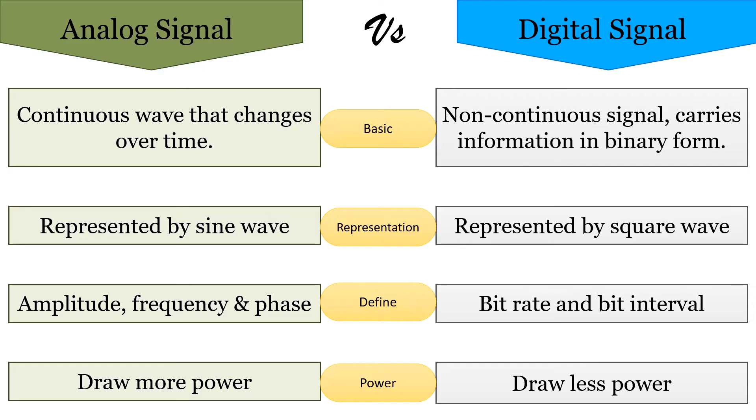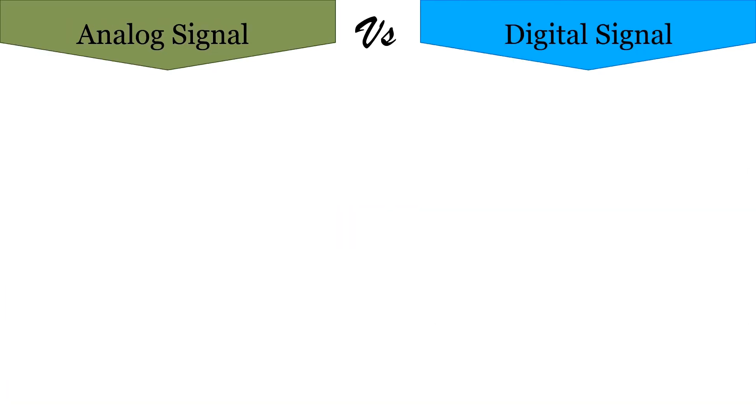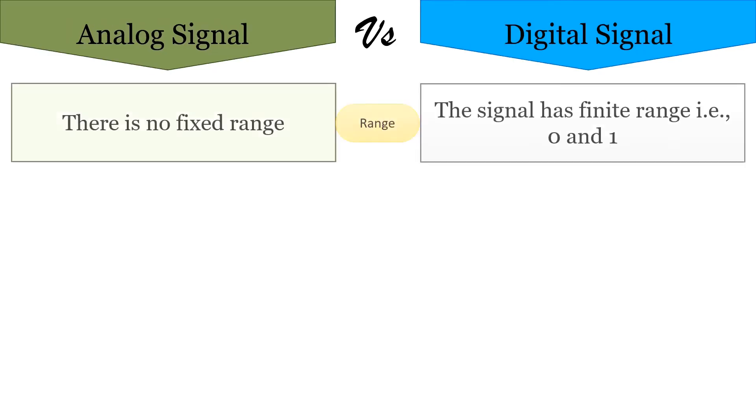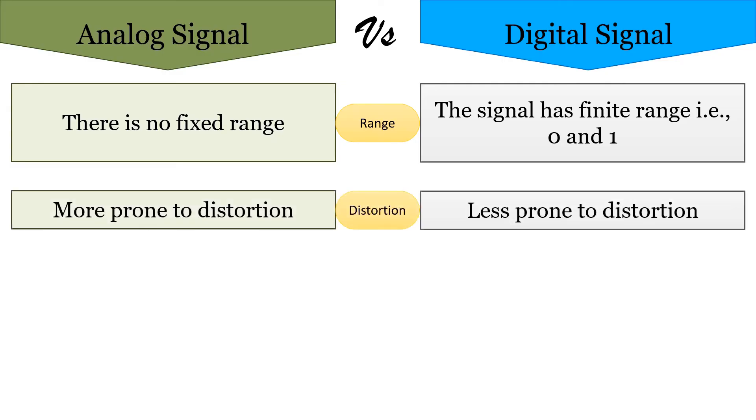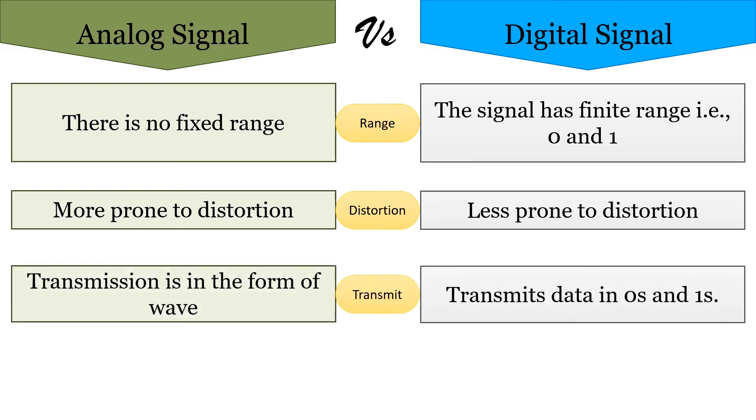Analog signals draw more power, whereas digital signals draw less power. The range of analog signal is not fixed, whereas the range of digital signal is finite, which can either be zero or one. Analog signals are more prone to distortion in response to noise, but digital signals have immunity in response to noise and hence rarely face any distortion. Analog signals transmit data in the form of waves, whereas digital signals transmit data in binary form, i.e., in the form of bits.